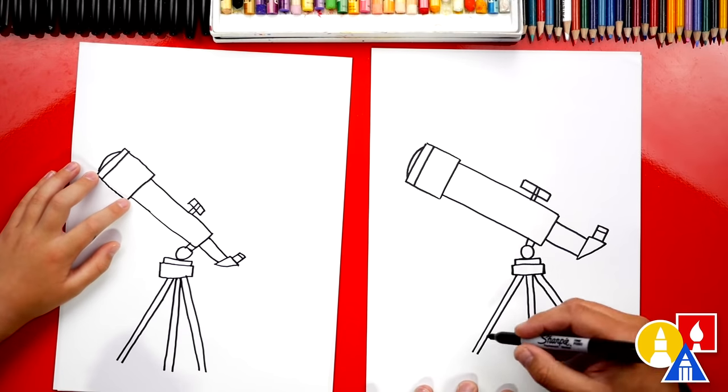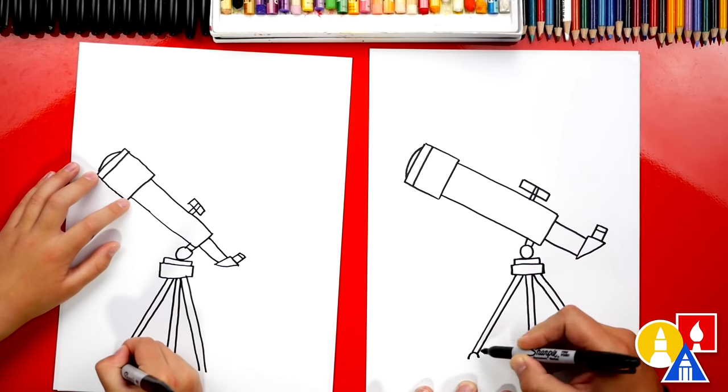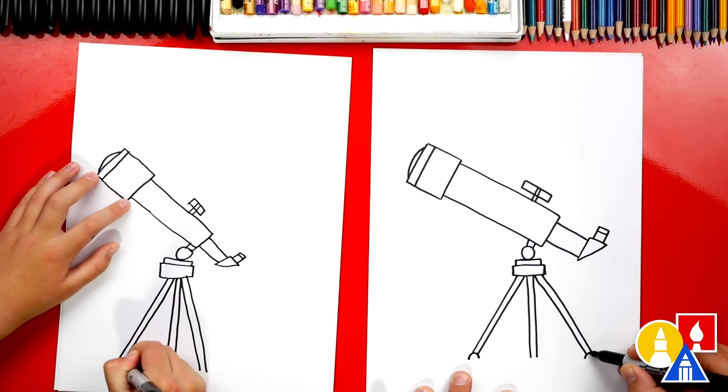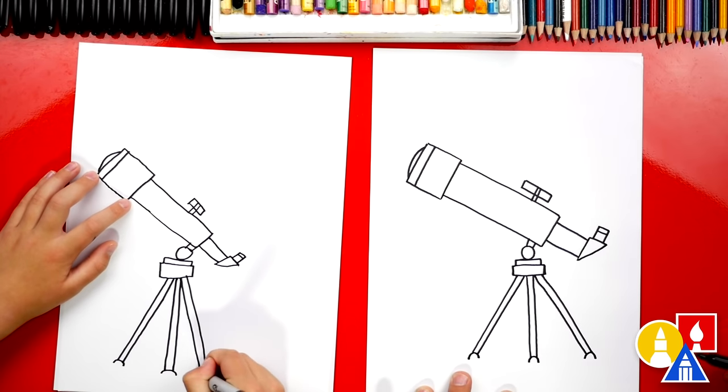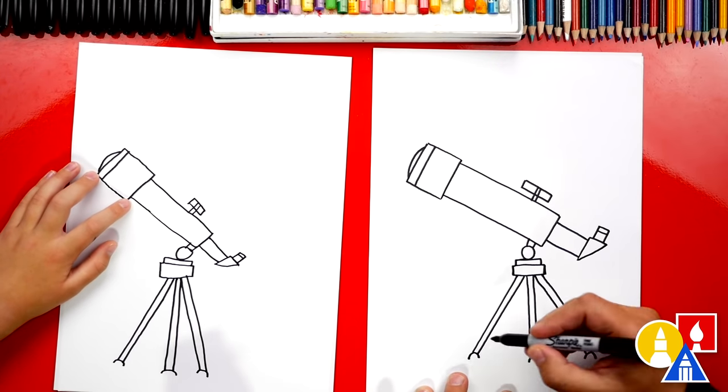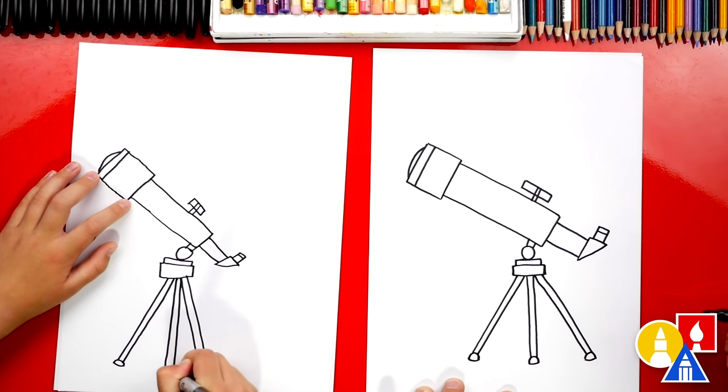Then we could draw feet at the bottom of the legs. This is what keeps the legs from slipping. So I'm going to draw an upside down U on each of the legs. And then we can connect the bottom of that U shape to complete it.